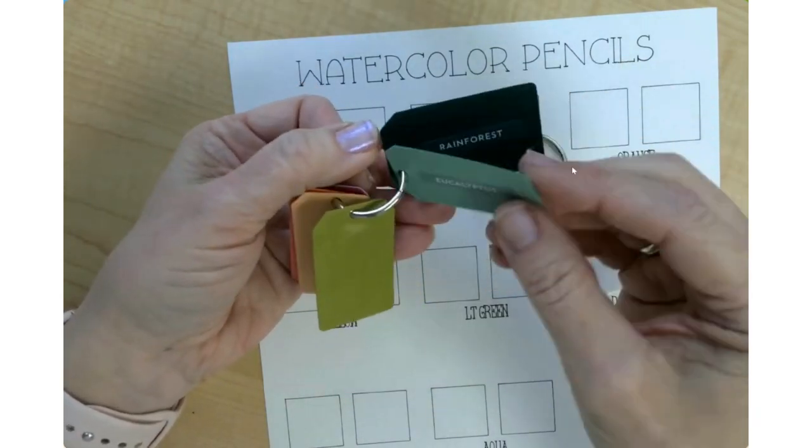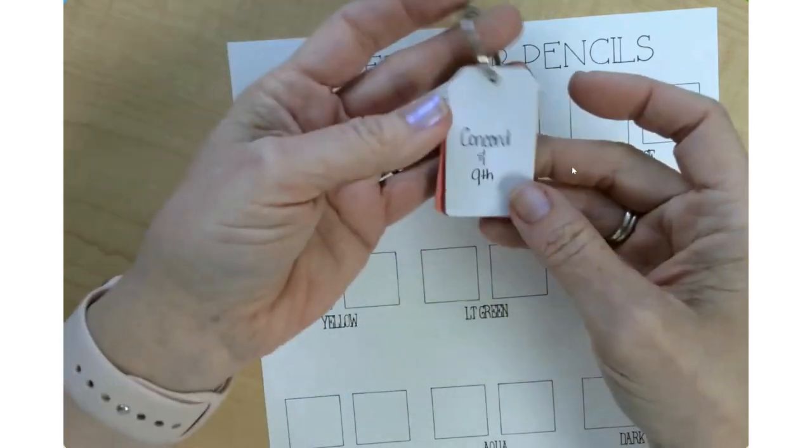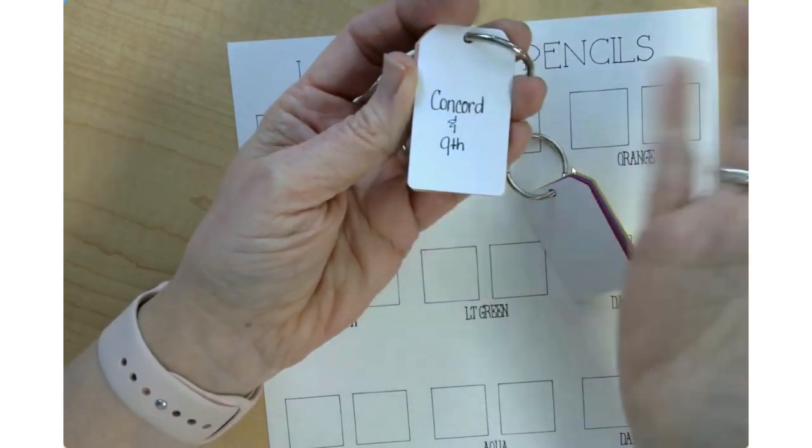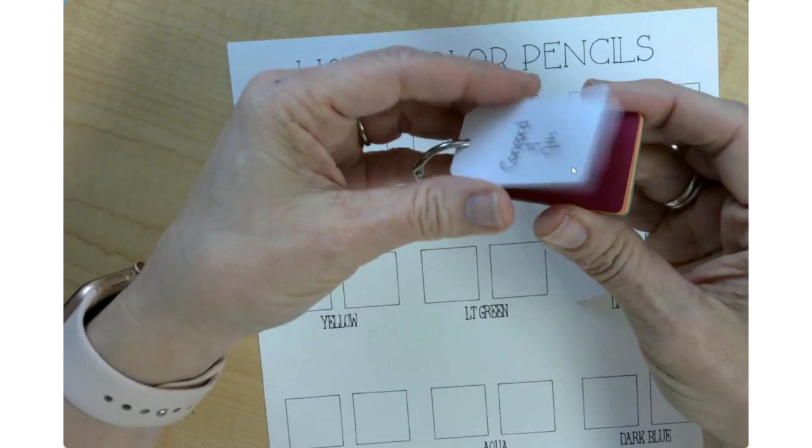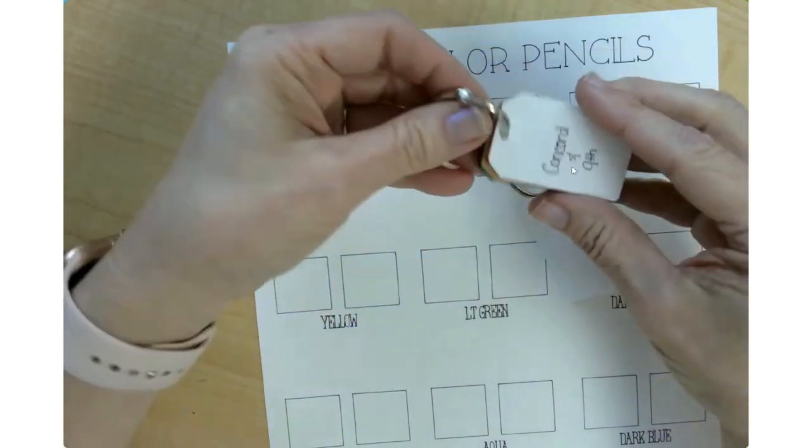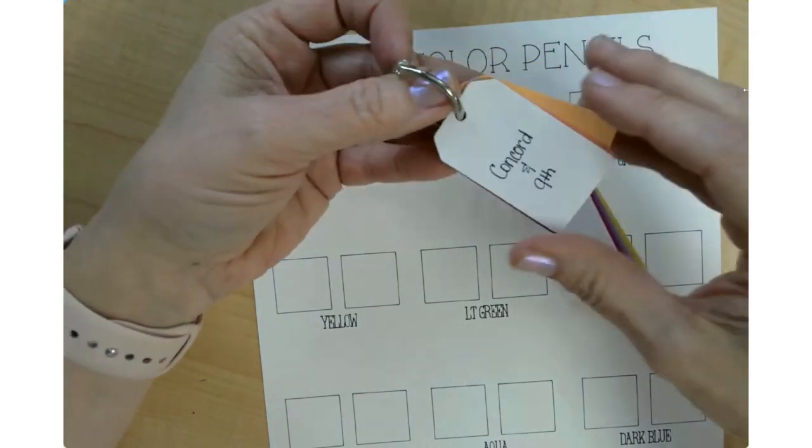I put them here on a binder ring and then I just labeled it with a white piece. I just wrote Concord and 9th so I know what company this is and what color they are. I'll just be adding to that as I buy more cardstock from Concord and 9th.